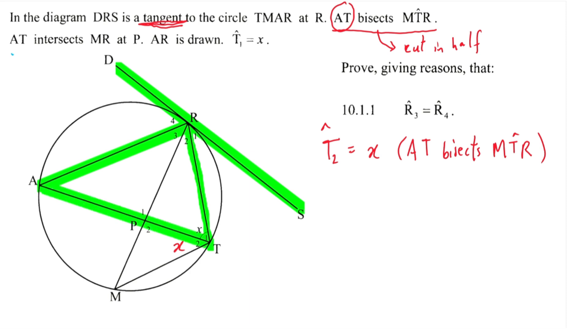Perfect. Now we can clearly see that T1 will be equal to R4 due to tan chord theorem. Therefore R4 should be x as well. So we can write R4 is equal to T1, which